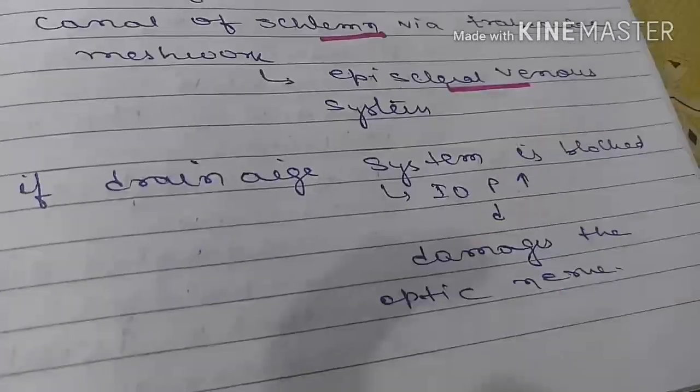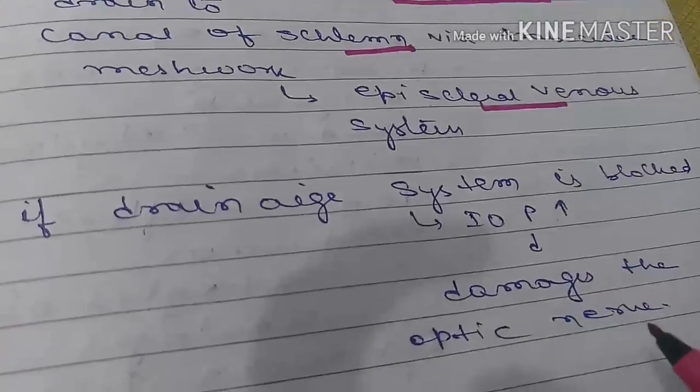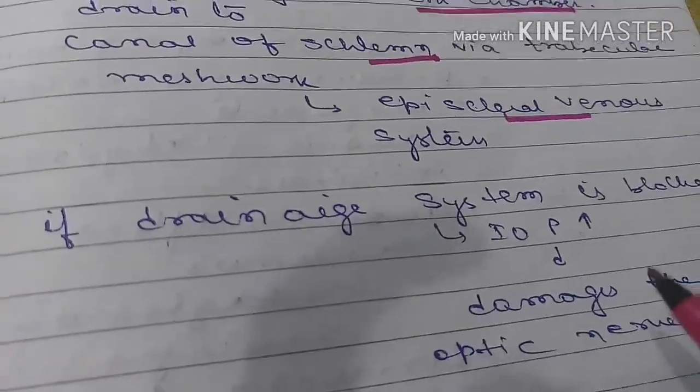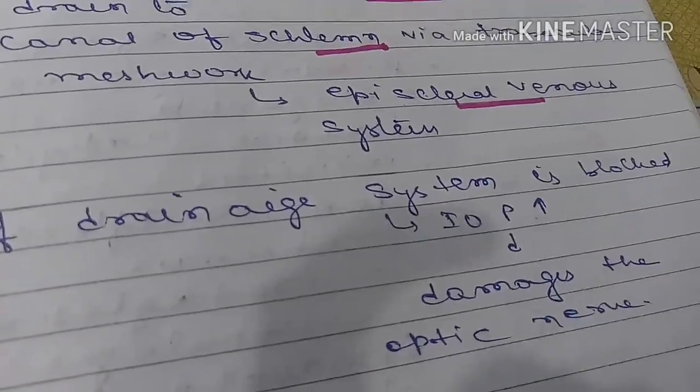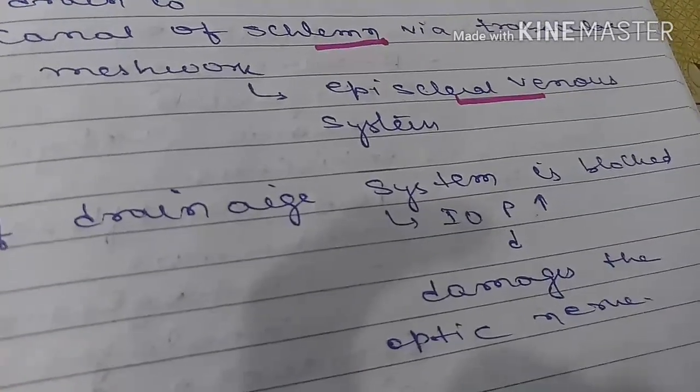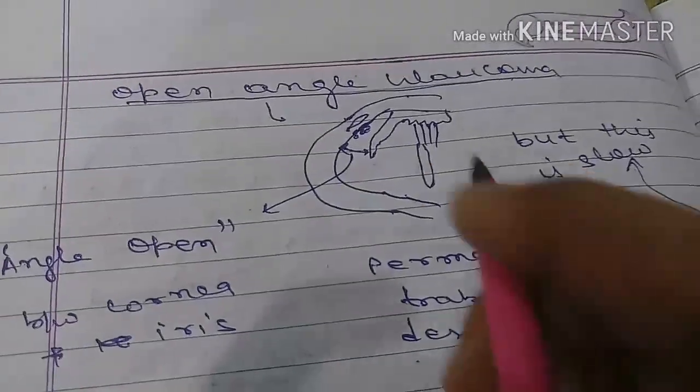If the drainage system is blocked, intraocular pressure will increase and that will damage the optic nerve. Glaucoma is damage to retinal layers that includes optic nerve or ganglionic cells, and it is divided into two types.